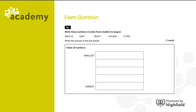So here is an example exam question: write these numbers in order from smallest to largest. What I'd like you to do is pause the video, have a go at the question and press play when you're ready to see the answer. Did you get it right? All we've done here is make sure that the numbers are in columns and then it becomes easy to compare.